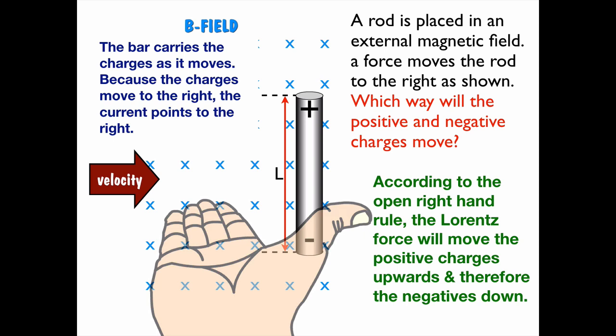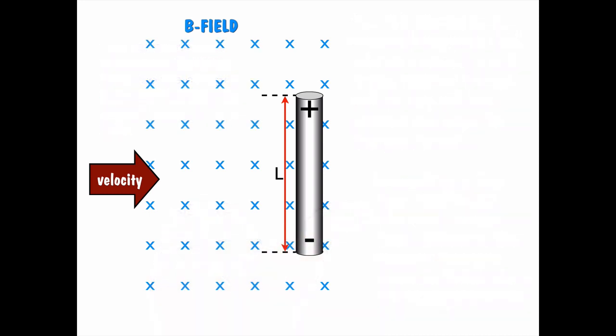So according to the open right-hand rule, the positive charges are going to feel a force going upwards, and negative charges behave oppositely, so they'll go downwards. So now, positive at the top of the wire, negative at the bottom of the wire, and it's separated by this length L. So I have two things of separated charges. That makes a battery.